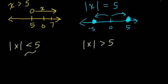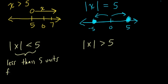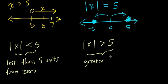Intuitively, what this means is that the distance of your x variable from 0 has to be less than 5 — so it's less than 5 units from 0. Effectively, it's saying: give me every number that's less than 5 units away from 0. And the other inequality says the opposite — the absolute value of x, the distance from 0, is now greater than 5, so we want every number whose distance from 0 is greater than 5 units.